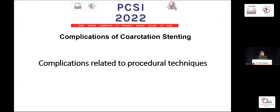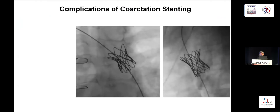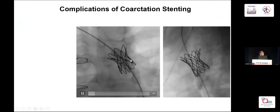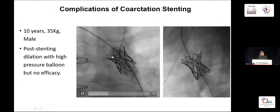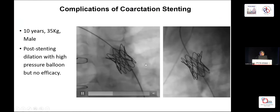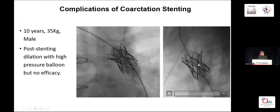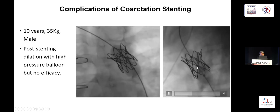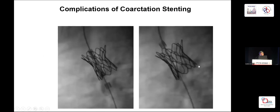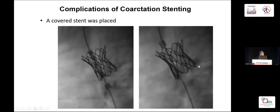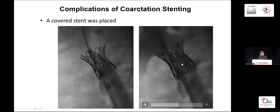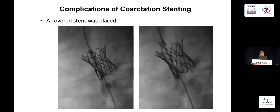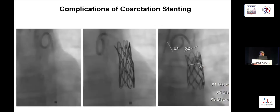The second category is complications related to procedure. In this case, I put the stent and it looked very beautiful, but there was a residual pressure gradient. The patient was 10 years old. We used a high-pressure balloon but it was not effective. After many attempts, the stent fractured and we could not achieve further dilatation due to the broken stent. We then had to place a second covered stent inside the first, achieving a good result. So we should try to fully open the stent on the first attempt rather than making multiple high-pressure attempts that can cause fracture.